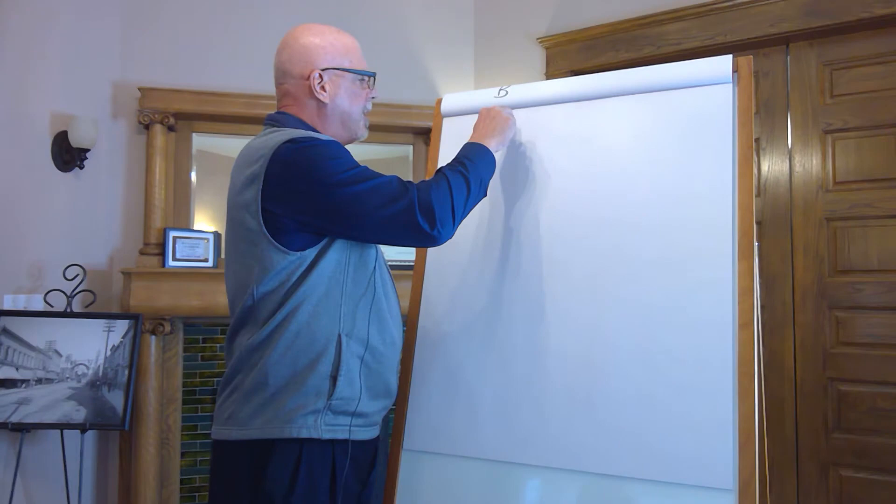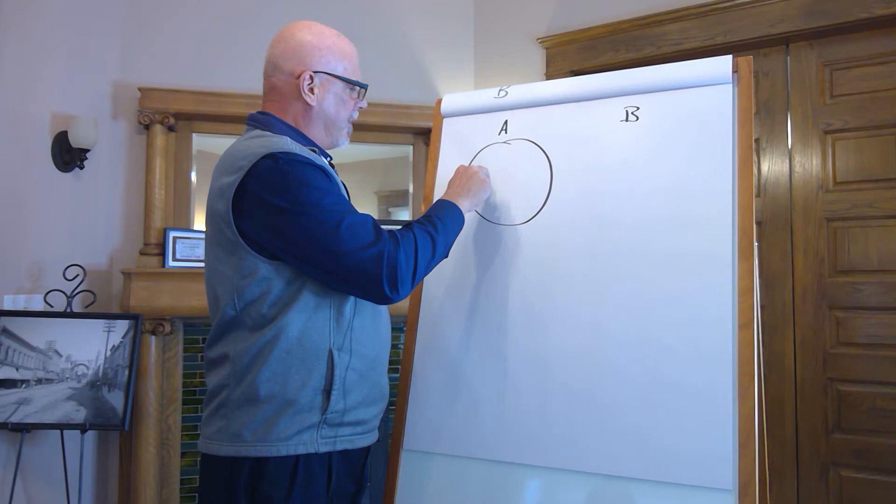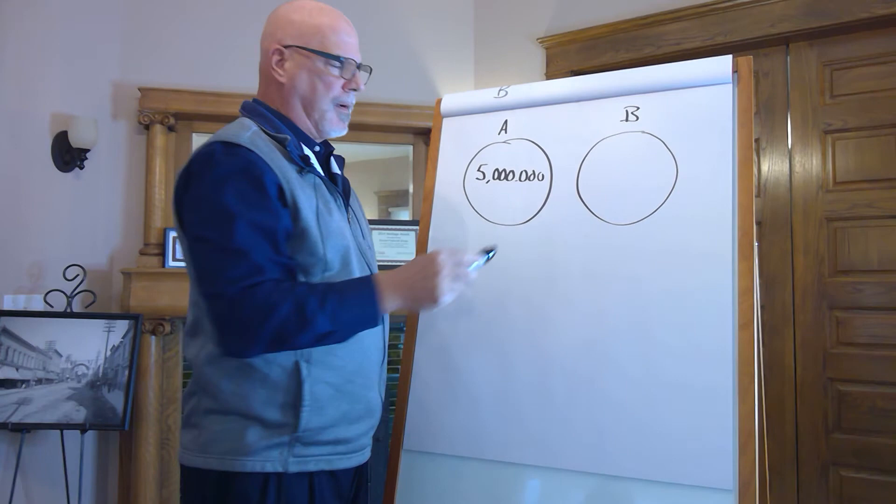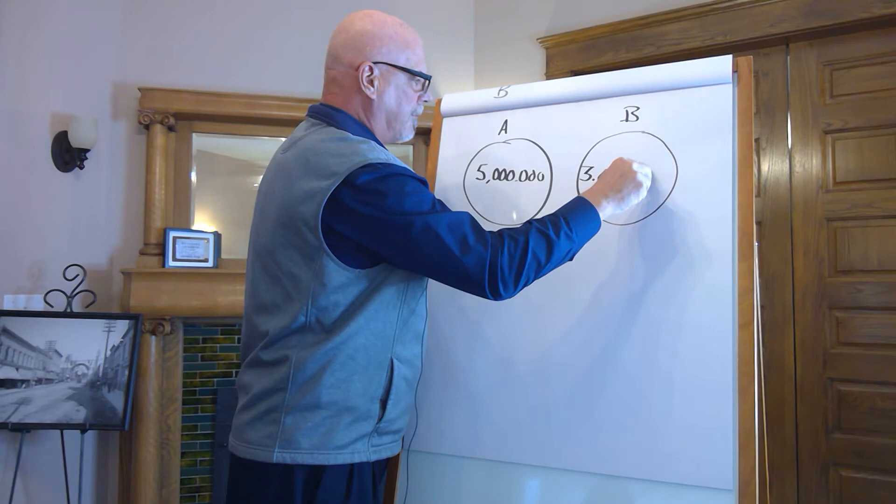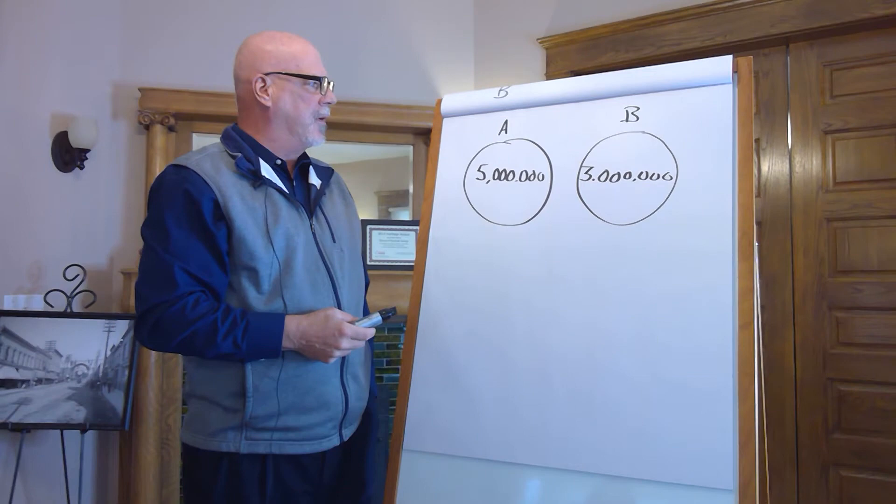I'm going to give you a choice of being two different people. Person A and Person B. Person A has accumulated a nest egg of five million dollars. Person B has accumulated a nest egg of three million dollars. Now, my first question to you is, do you want to be Person A or do you want to be Person B?